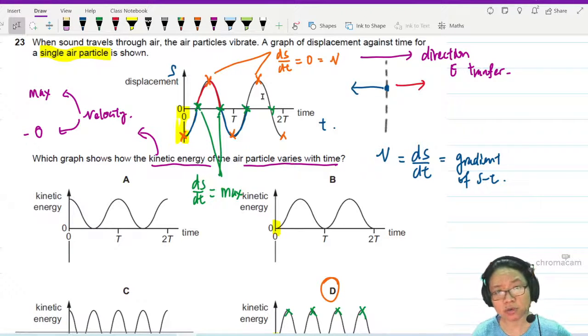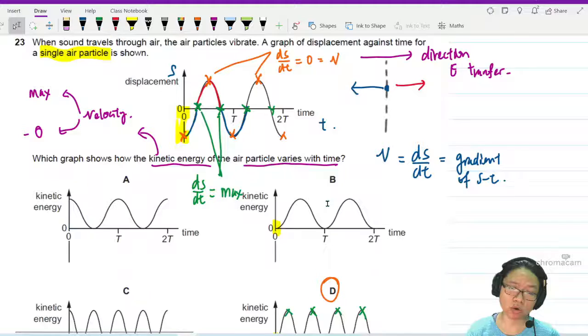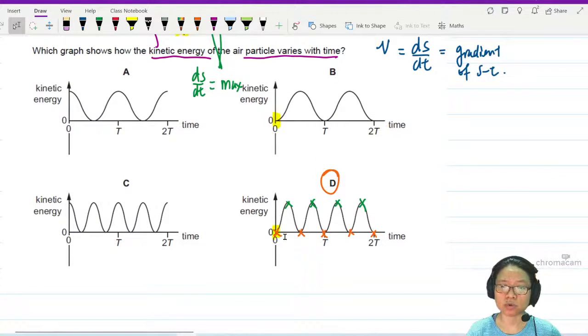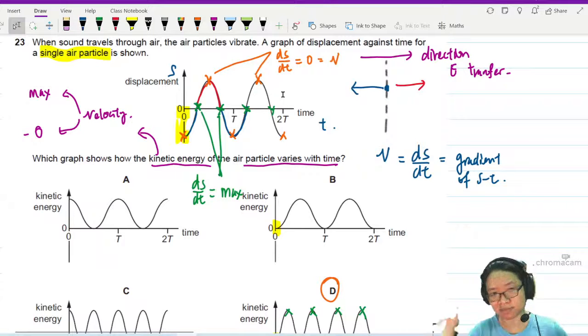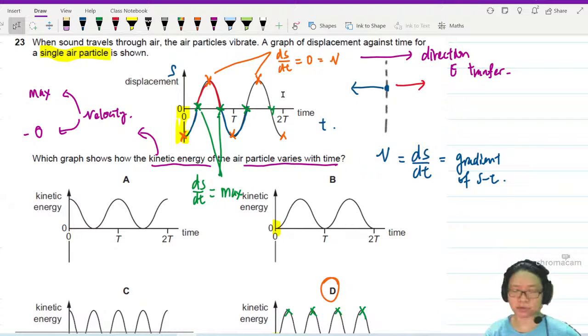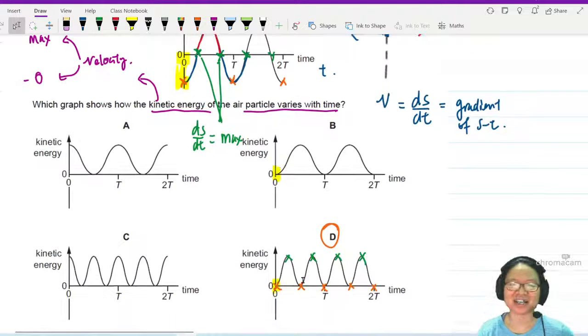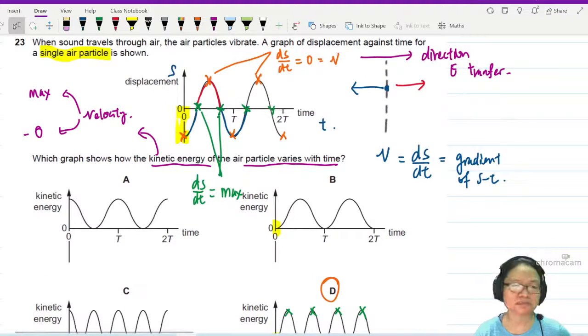When the gradient is zero, velocity is zero, KE will be zero. When the gradient is maximum, which is all this maximum point, okay, inflection point, then there are four inflection points.